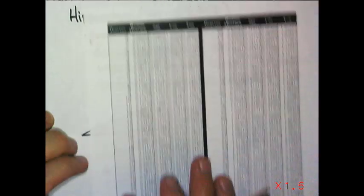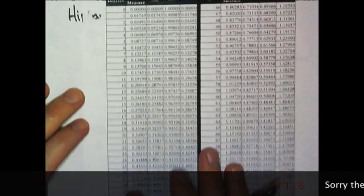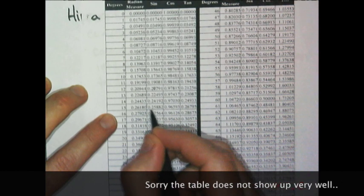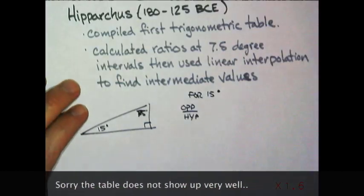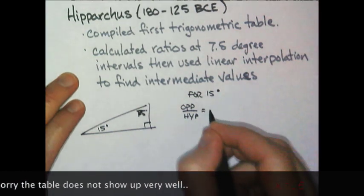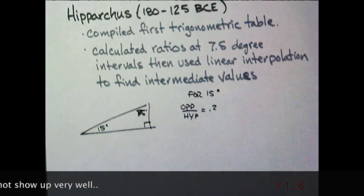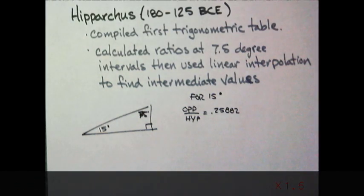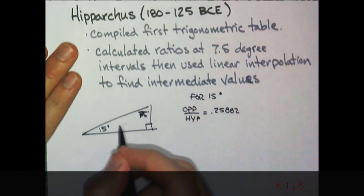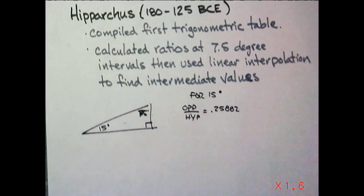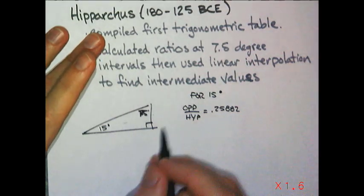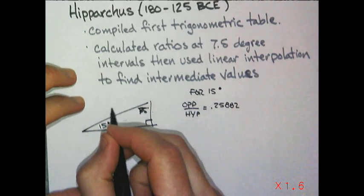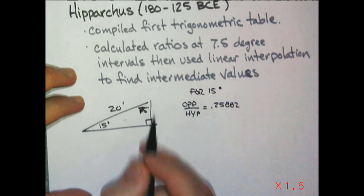The table I have doesn't show up very well. For 15 degrees, I've got the ratio right there, 0.25882. That is for 15 degrees. That's the ratio of the opposite side compared to the hypotenuse. You're going to think, well, big deal. How can I use that?